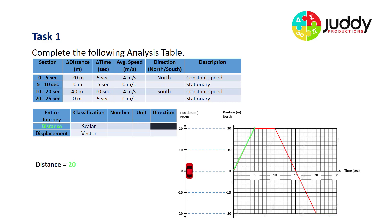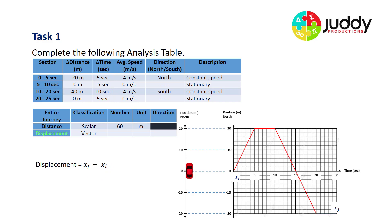For the entire journey: 20 meters from zero to five, zero meters from five to ten, 40 meters from 10 to 20, and zero meters from 20 to 25 — giving a total distance of 60 meters. Displacement is calculated as final position minus initial position. Our initial was zero and our final is minus 20 meters north, so displacement is minus 20 meters north, which can be written as 20 meters south.